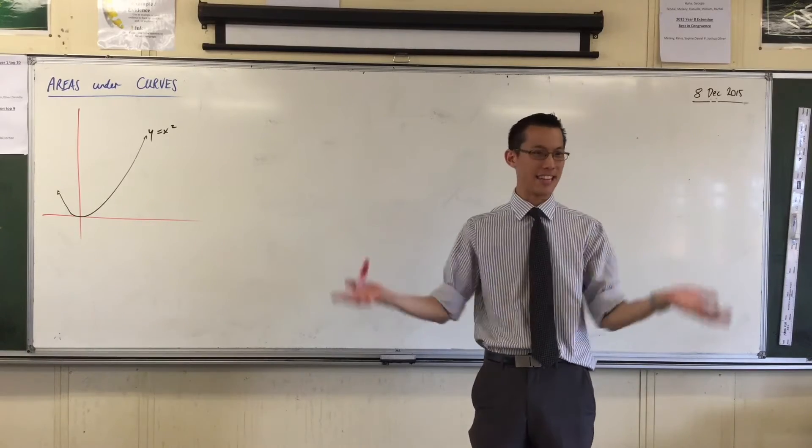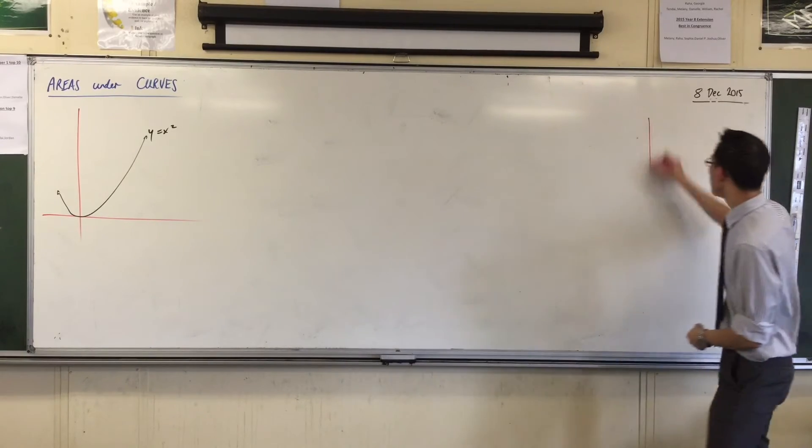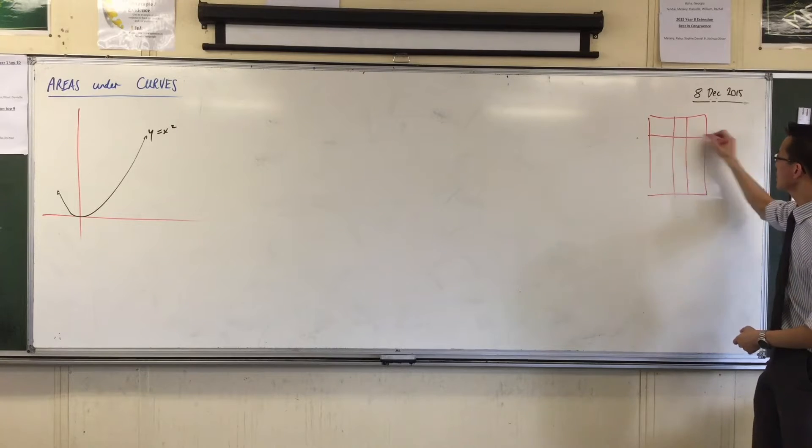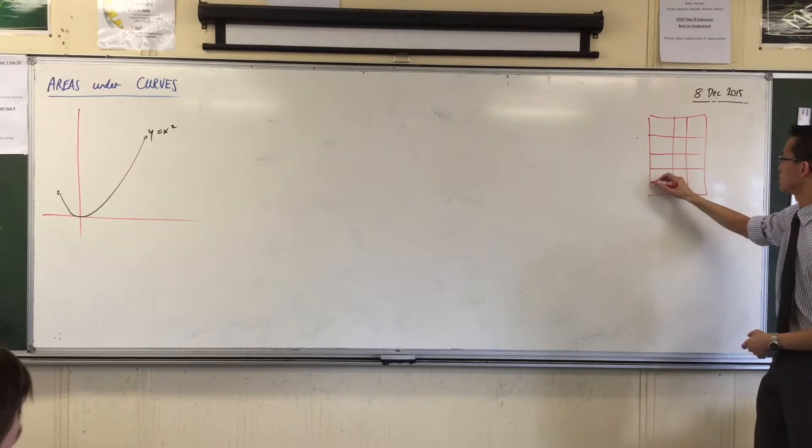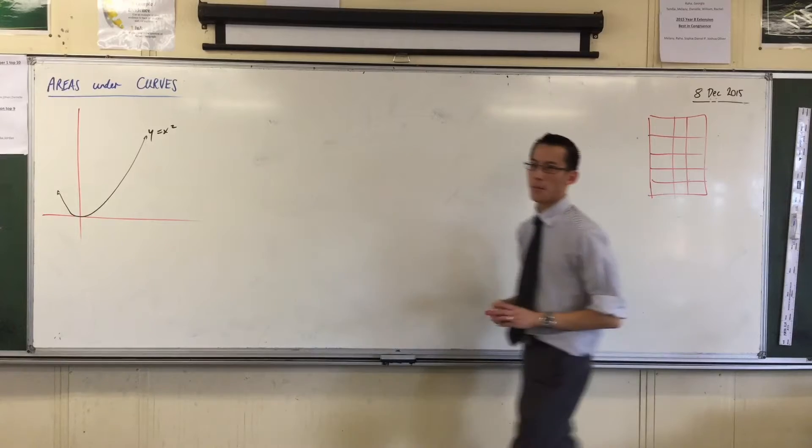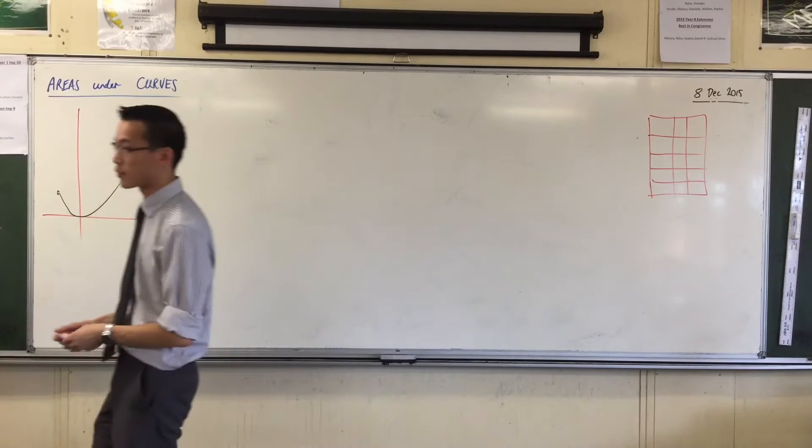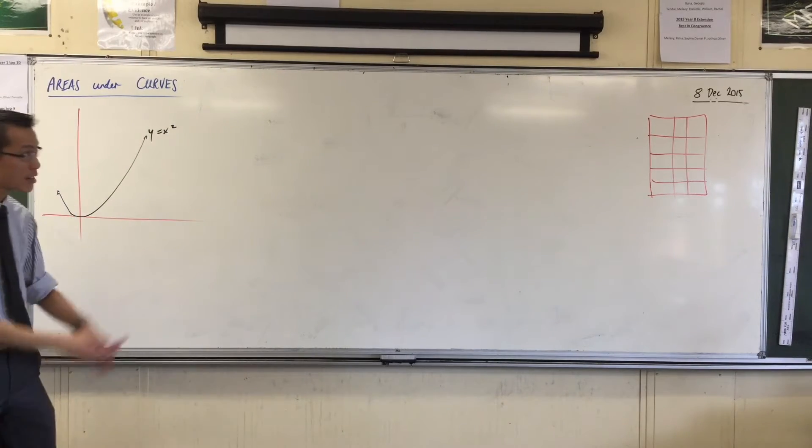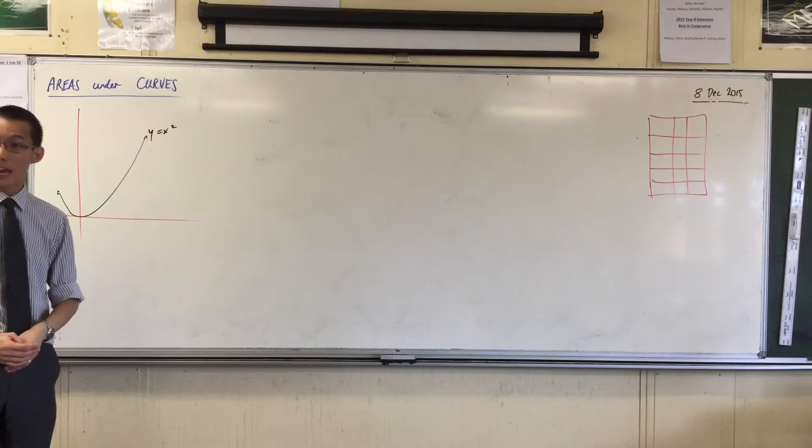We learn multiplication in terms of area. For example, establishing the fact that 3 times 5 is the same as 5 times 3 is very easy to establish through area.